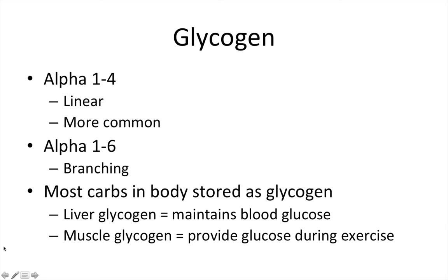Glycogen is also seen in alpha-1,4 and alpha-1,6 linkages, with the alpha-1,4 being more common. Most carbs in the body are stored in the form of glycogen — in the liver and in the muscle, but they serve different functions. The liver helps maintain blood glucose, snipping glycogen and distributing glucose molecules where needed. The muscle, on the other hand, is strictly used during exercise to provide glucose.